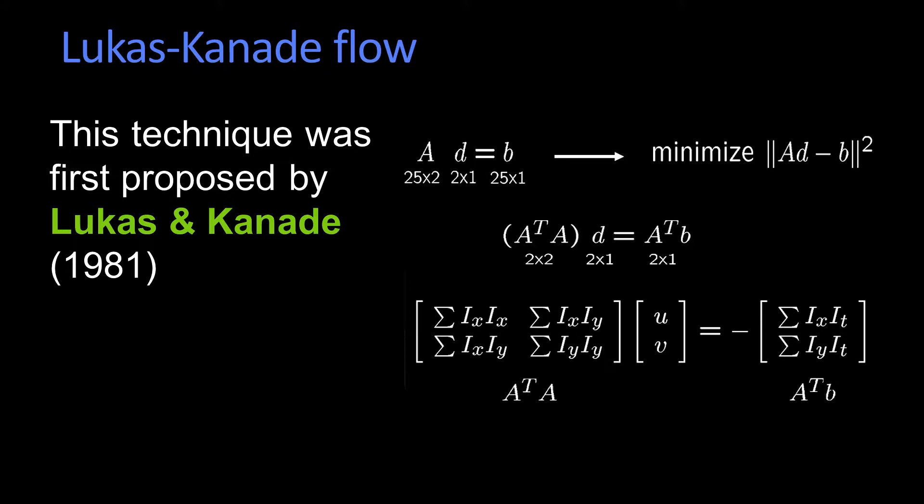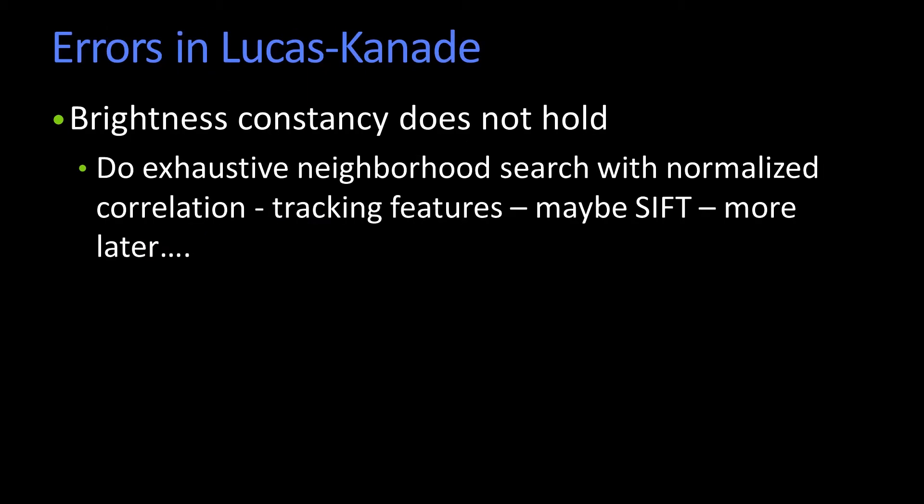But of course there were certain assumptions built into Lucas-Canadi that were sometimes problematic. So the main assumption was that the pixel as it moved didn't change its color, didn't change its intensity. So if brightness constancy doesn't hold, then you have to do something in terms of feature detection, finding a feature from one place to another. And we've already talked about doing SIFT detection and characterization in order to do these matches.